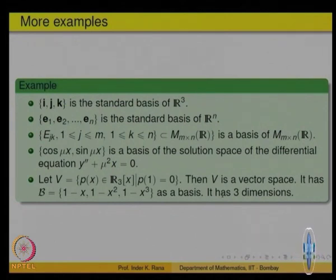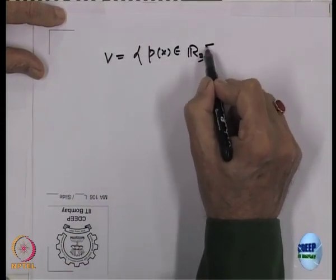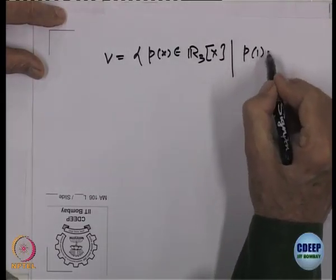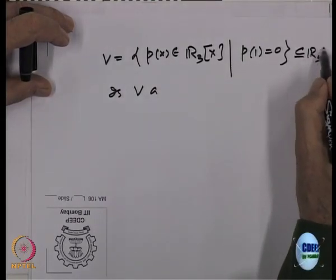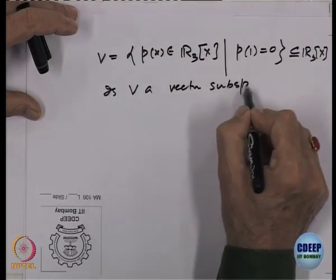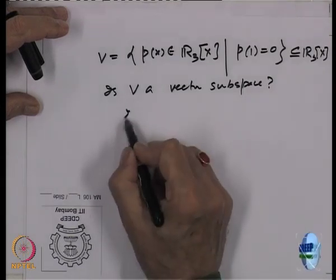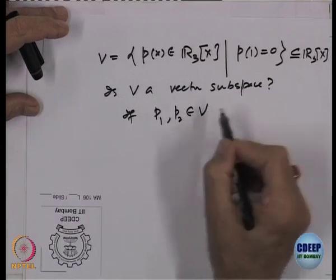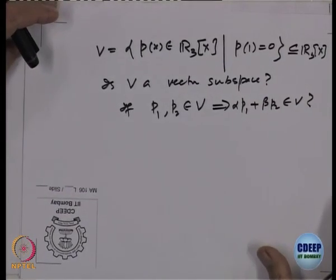Let us look at one more example: all polynomials of degree less than or equal to 3 with P(1) = 0. So V is the set of all P(x) belonging to R_3(x) such that P(1) = 0. First, is V a subspace of R_3(x)? If P_1 and P_2 belong to V, does alpha·P_1 plus beta·P_2 belong to V? We need (alpha·P_1 + beta·P_2)(1) = alpha·P_1(1) + beta·P_2(1) = alpha·0 + beta·0 = 0. Yes, so V is a vector subspace.